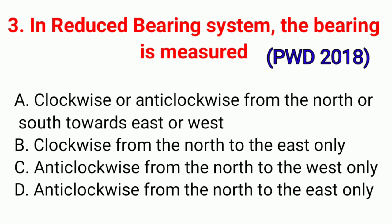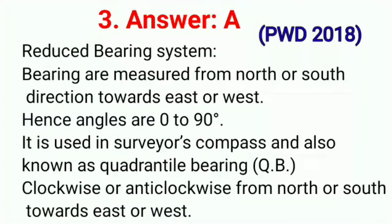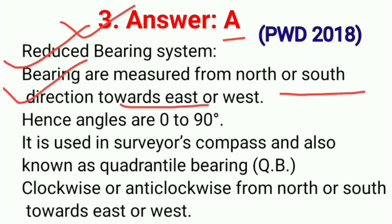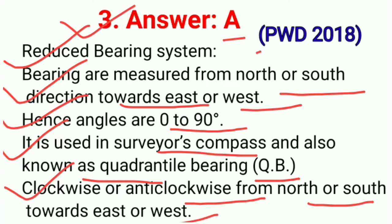Question No. 3. In reduced bearing system, the bearing is measured. This question is also asked in exam PWD 2018. Correct option A: Clockwise or anti-clockwise from north or south towards east or west. In the reduced bearing system, bearings are measured from north or south direction towards east or west, hence angles are 0 degree to 90 degrees. It is used in surveyor compass and also known as quadrantal bearing (QB). Correct option A.